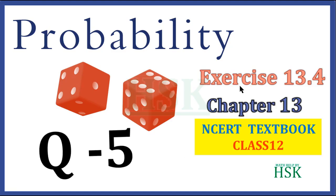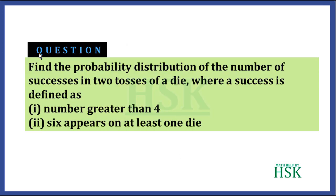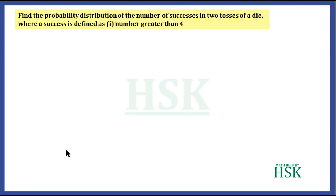This is question number five of Exercise 13.4 from the chapter Probability. The question is: find the probability distribution of the number of successes in two tosses of a die, where a success is defined as — in the first part, the number greater than four; and in the second part, six appears on at least one die.